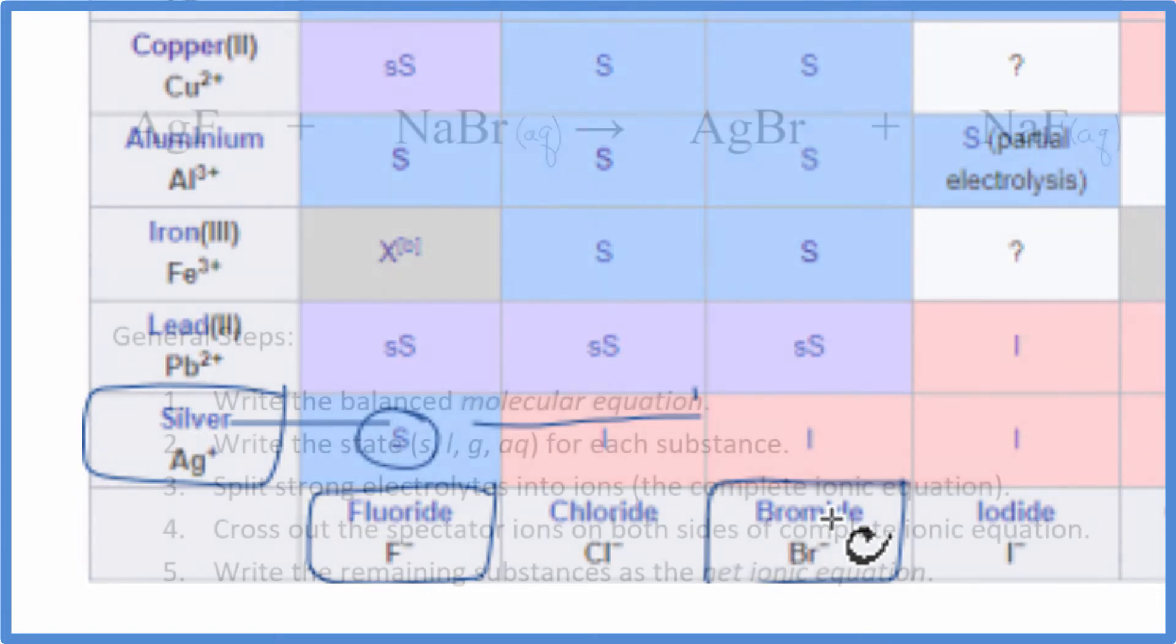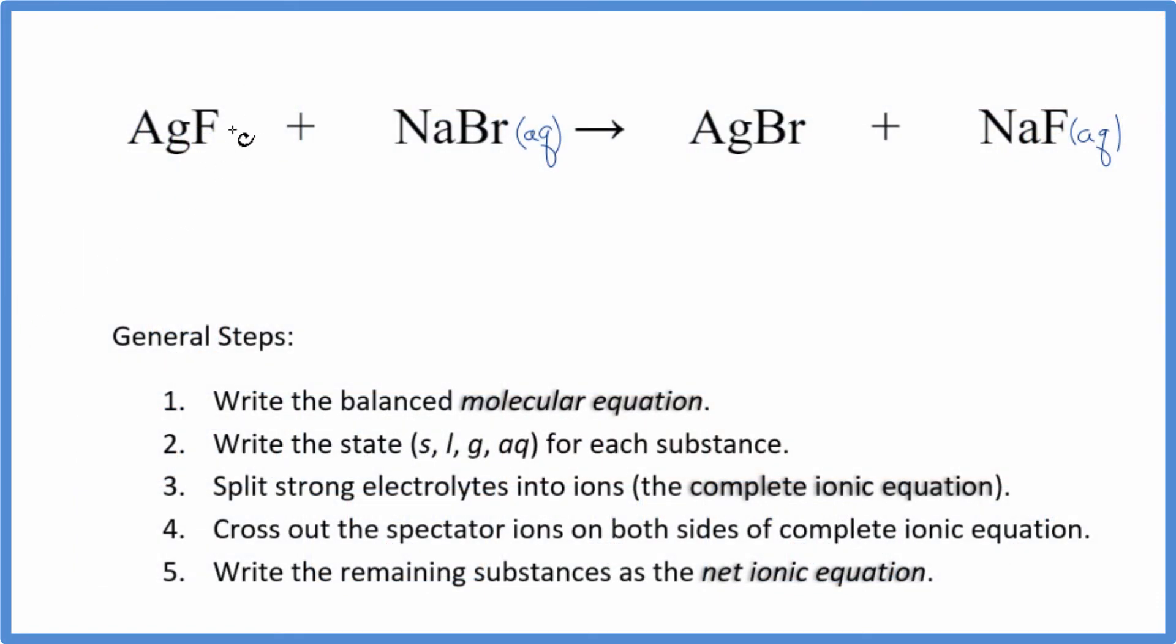Let's go back to our equation. So we said AgF, that's aqueous, dissolves, splits apart into its ions. But AgBr, that's going to be a solid. These two will react. This will form a solid. It'll fall to the bottom of the test tube as a precipitate. So this is a precipitation reaction. We have our states now.